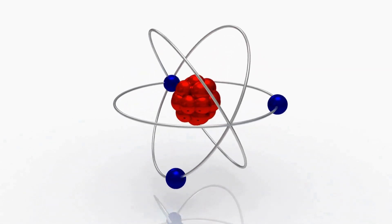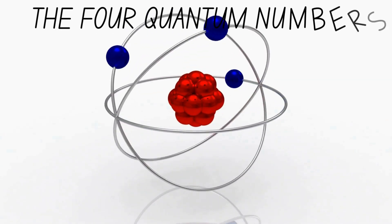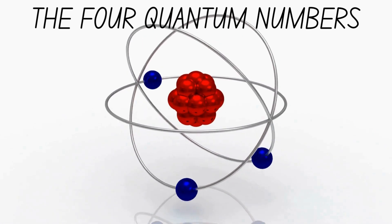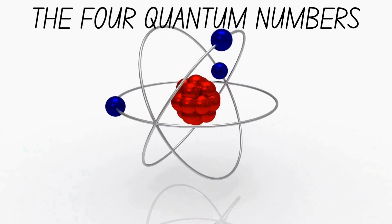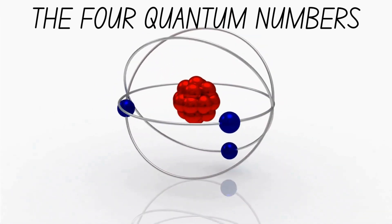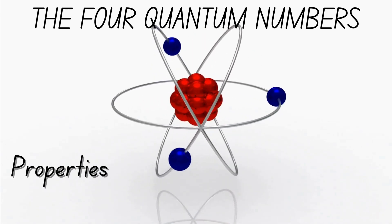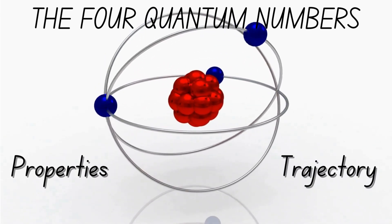In this lesson we're going to be talking about the four quantum numbers. Quantum numbers are a set of numerical values that describe the unique properties and trajectory of an electron in an atom.